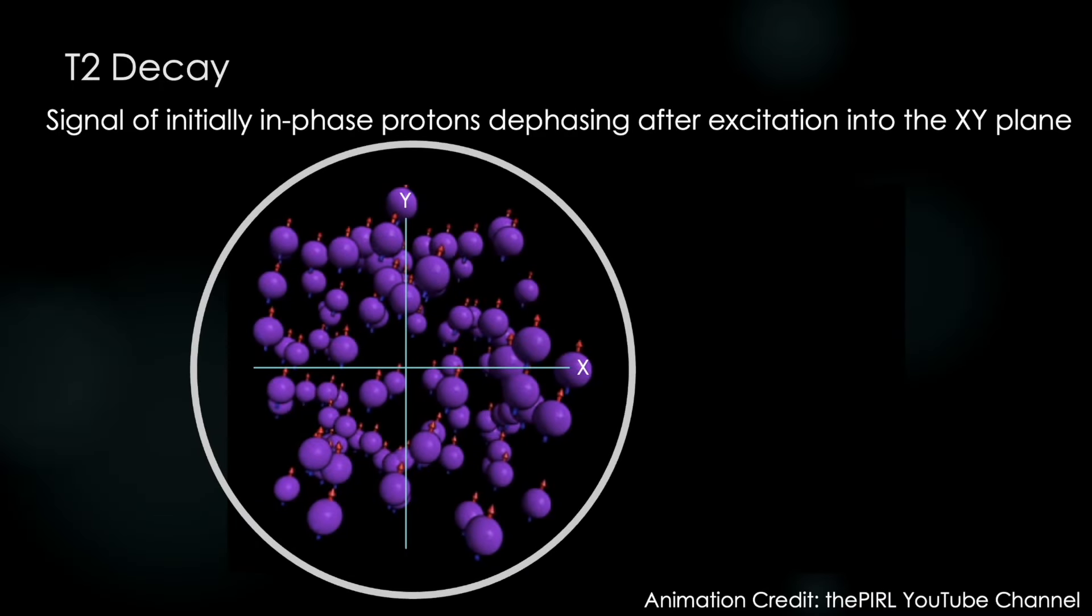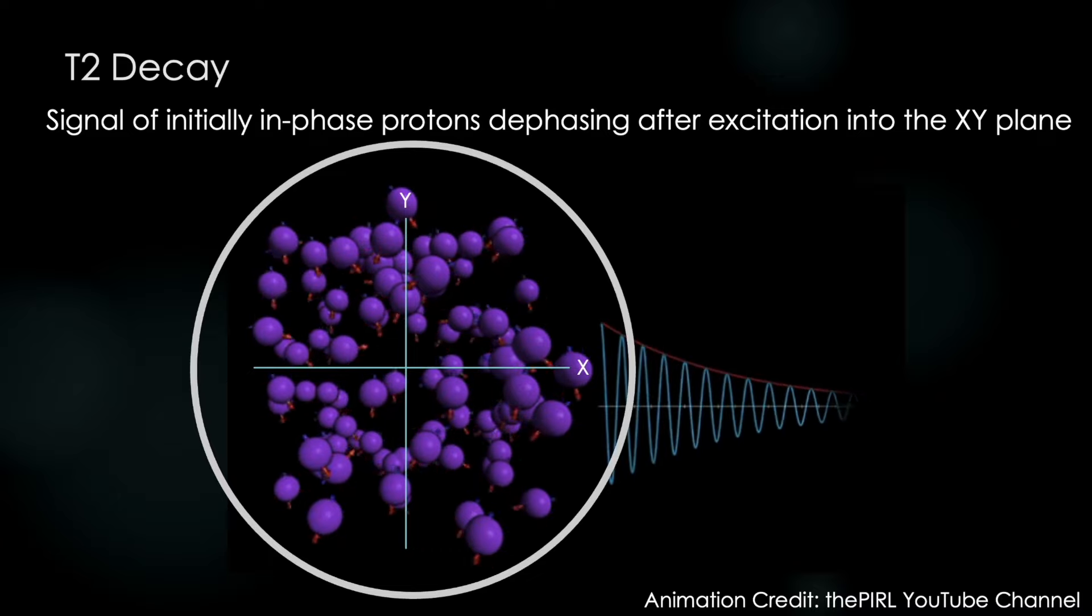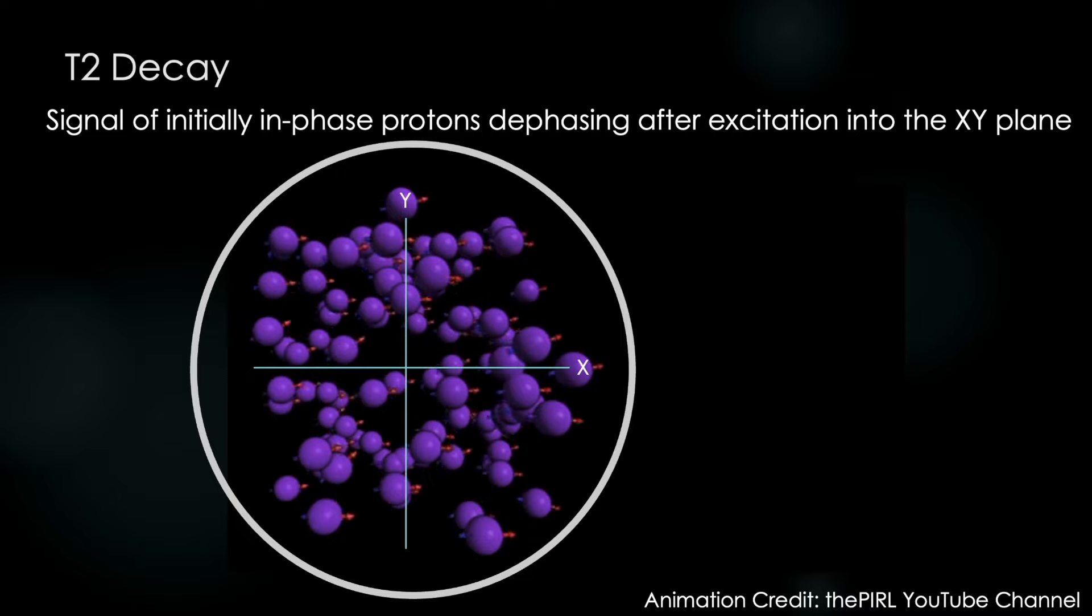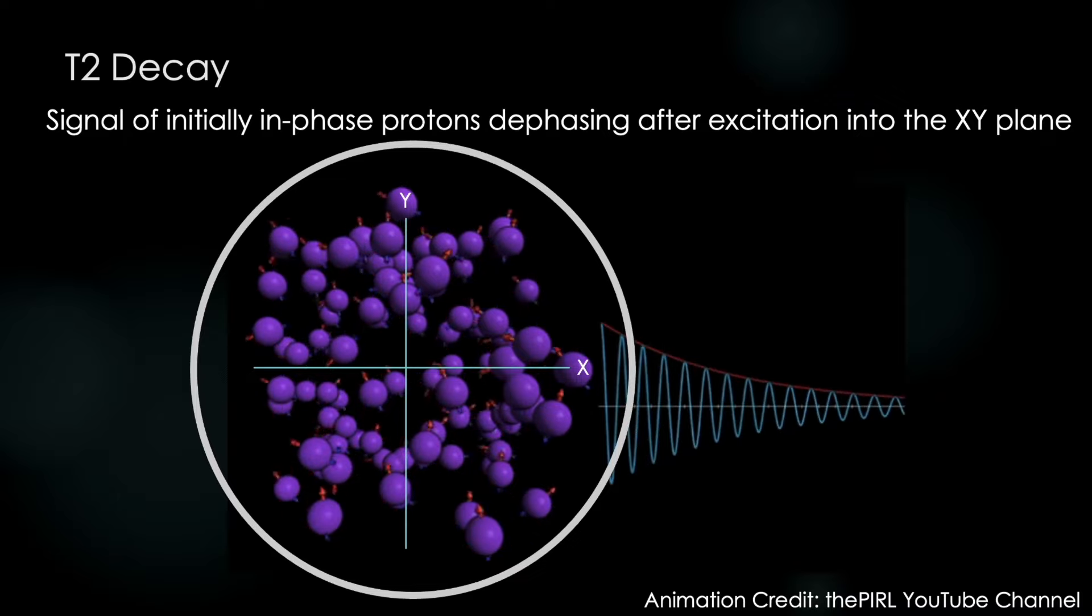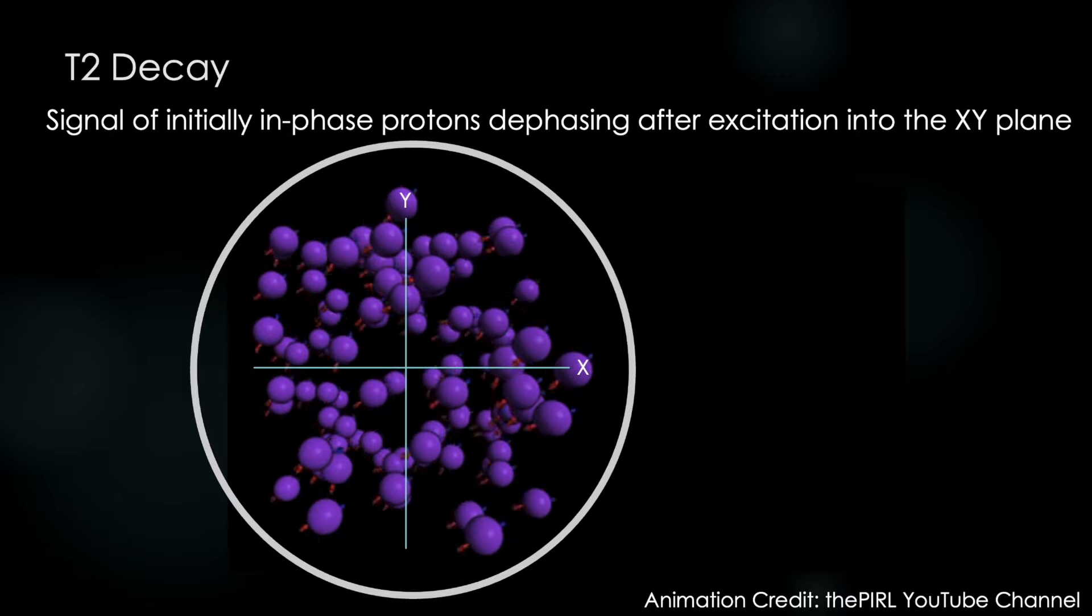So let's just take another look at this. Again, this is an animation adapted by the PIRL YouTube channel. All credit goes to them. And in this graphic, we're looking down the barrel of an MRI machine. And let's just look at what happens to these individual protons after we excite them. Notice that initially, all the protons are rotating at the same rate. And then they start interacting with each other. Some speed up, some slow down relative to each other. And with that, the signal decays and is lost. Let's just take a look one more time. They're spinning together. They start spinning at different rates. And we lose the signal.